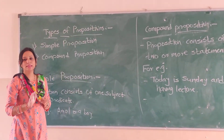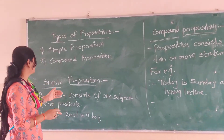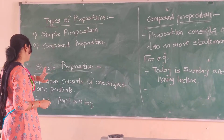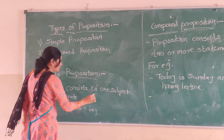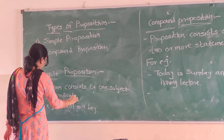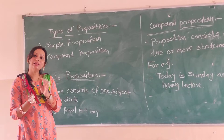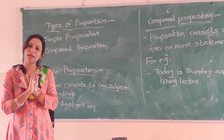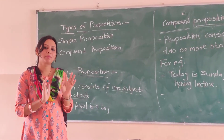There are basically two types of propositions: simple proposition and compound proposition. A simple proposition consists of one subject and one predicate. In simple words, a normal statement without any connective word is called a simple proposition.